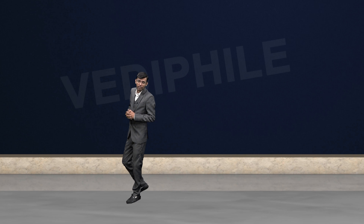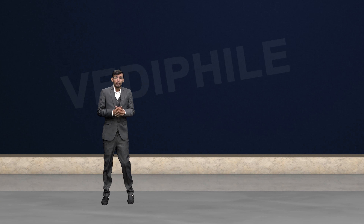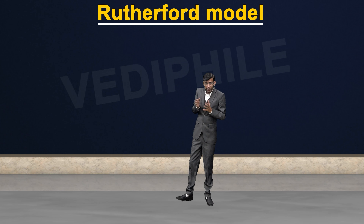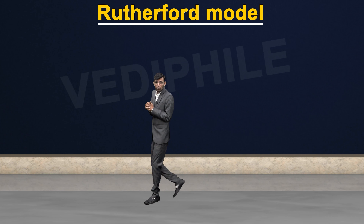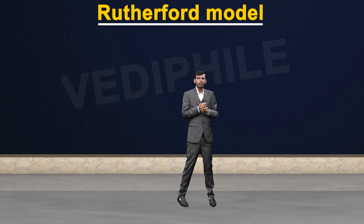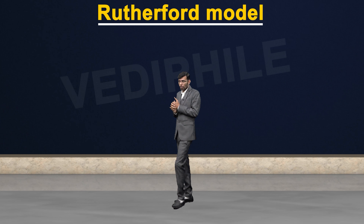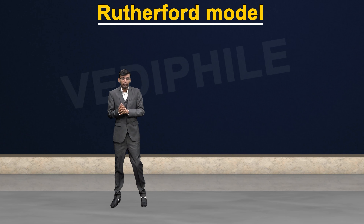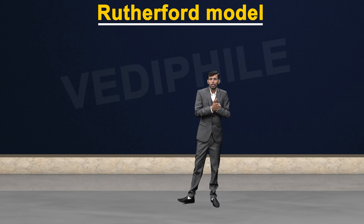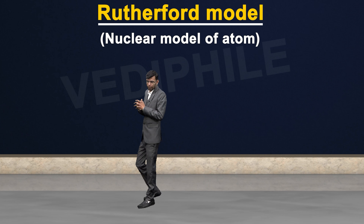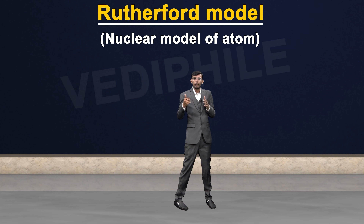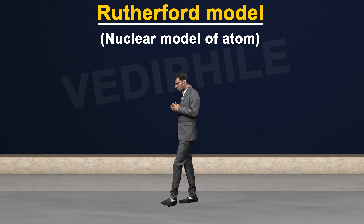In the previous lecture we discussed a brief introduction of the Rutherford model. In this lecture we are going to discuss the Rutherford model in detail. In 1911, Rutherford performed the experiment and named his model the nuclear model of atom. Rutherford and his students Geiger and Marsden performed this experiment.